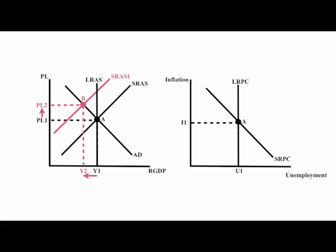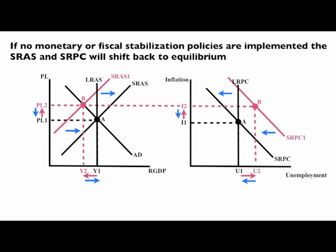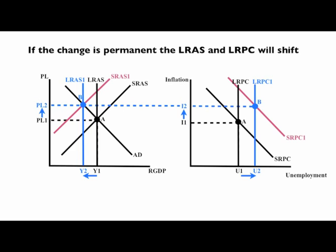With a decrease in short-run aggregate supply, our price levels will increase and our GDP will shift to the left. Inflation and unemployment will both increase, shifting our short-run Phillips curve to the right. If no monetary or fiscal stabilization policies are implemented, the short-run aggregate supply and short-run Phillips curve will shift back to equilibrium. If the change is permanent, the long-run aggregate supply and the long-run Phillips curve will shift, and these price levels, inflation levels, GDP, and unemployment levels will be permanent.